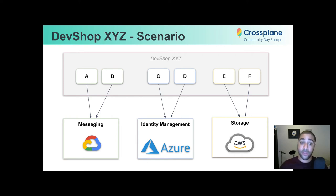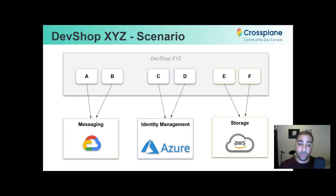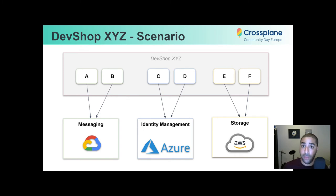In this case, let's say we have six applications. A and B pertain to messaging, so to meet that requirement we're going to deploy those in the GCP cloud. C and D make use of identity management, so we're going to deploy them into Azure. And lastly, E and F we will deploy into AWS since they leverage storage.